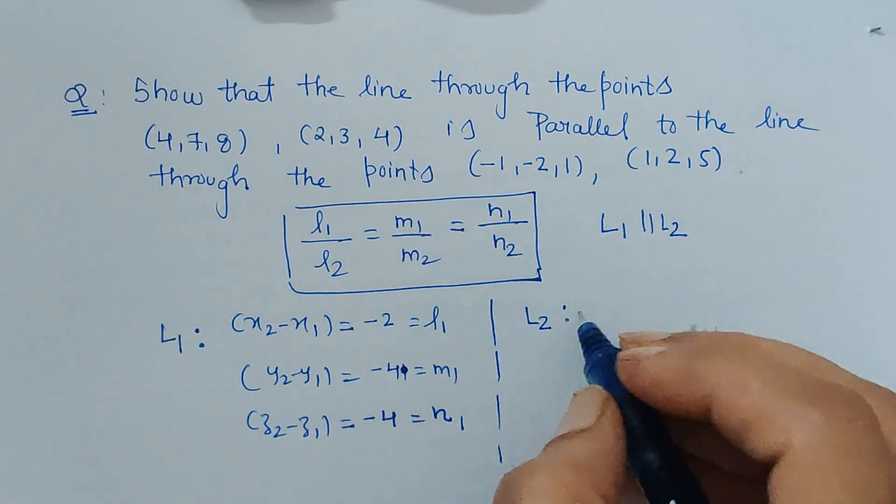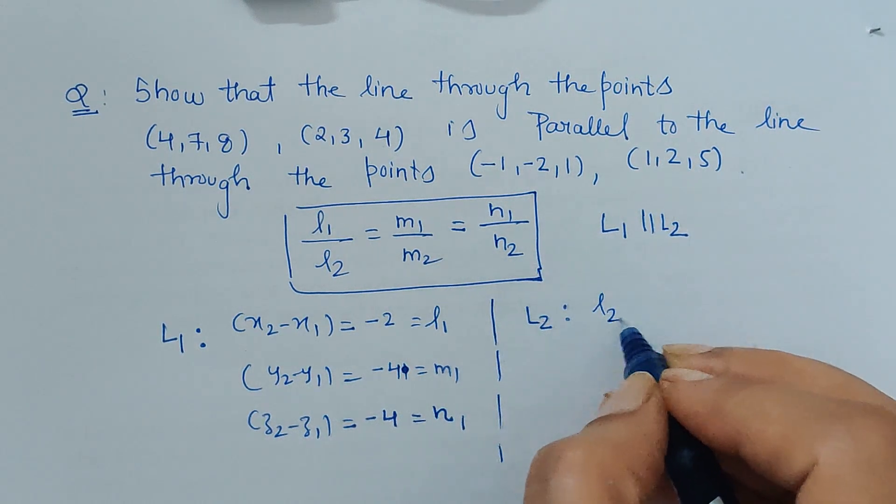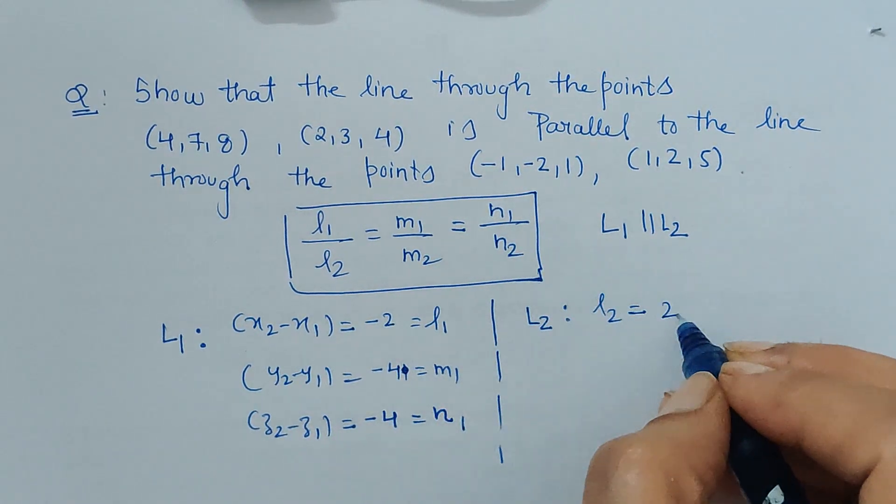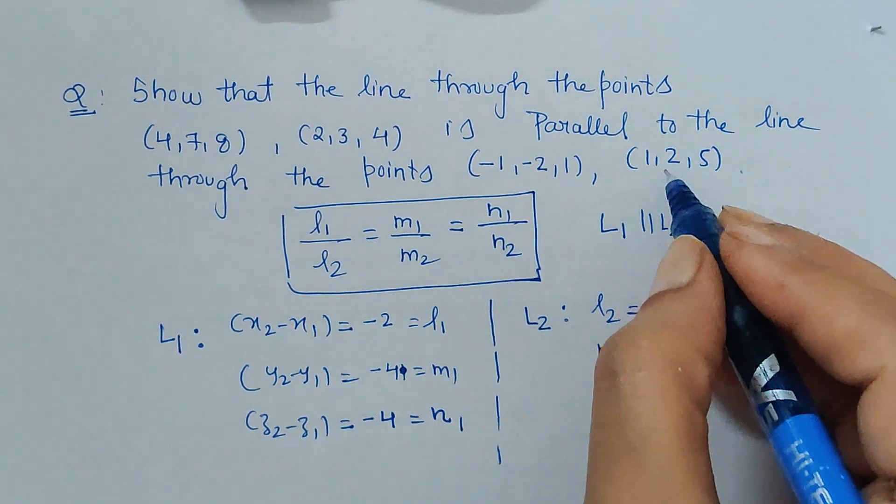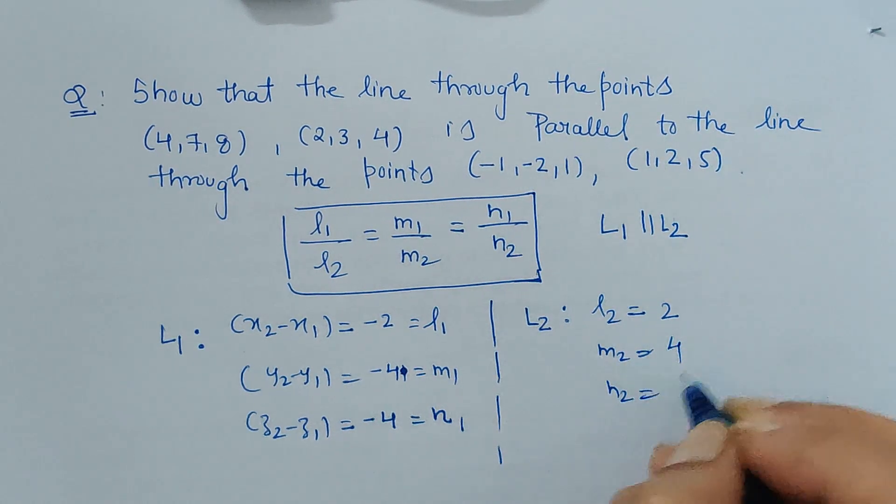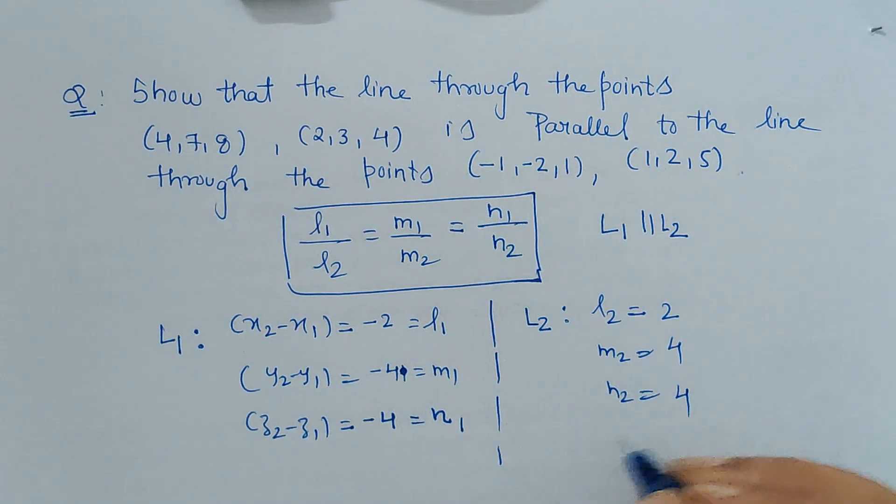The same thing can be calculated. l2 is 1 minus negative 1, which is 2. Then m2 is 2 minus negative 2, which is plus 4. And n2 is 5 minus 1, which is 4.